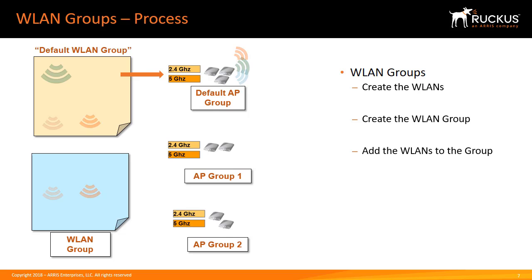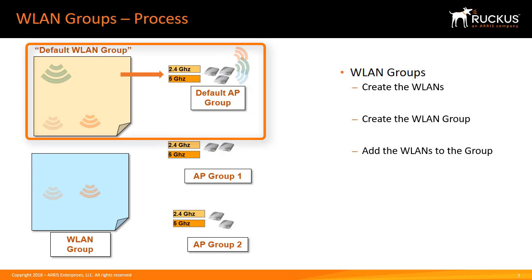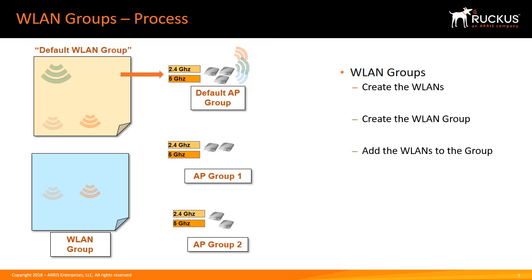Anytime you configure a new wireless LAN, it is associated with the default wireless LAN group unless you specifically place it in a wireless LAN group that you have pre-configured. If a wireless LAN was configured prior to a custom wireless LAN group being created, the wireless LANs will remain associated with the default wireless LAN unless you explicitly remove it.